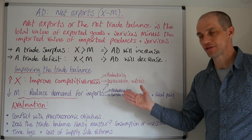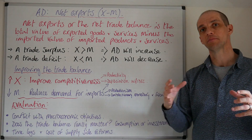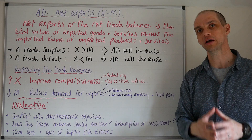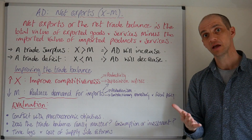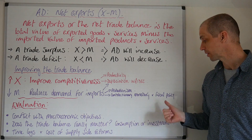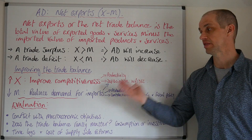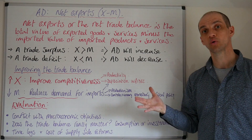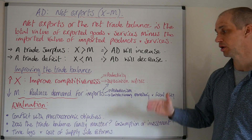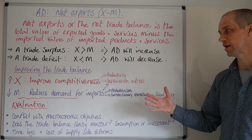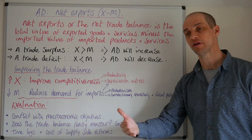Some countries may wish to undertake contractionary monetary or fiscal policy — essentially making the economy smaller and reducing people's incomes. Increasing interest rates raises the cost of borrowing and reduces disposable income; raising taxation or cutting government spending has the same impact, potentially reducing demand for imported goods. The big problem, of course, is how this conflicts with the macroeconomic objective of economic growth — a key evaluation point — as there's a real risk of worsening the trade balance and failing to achieve other macro objectives.